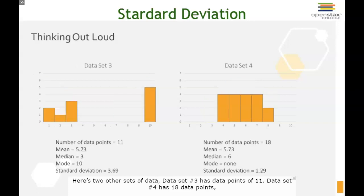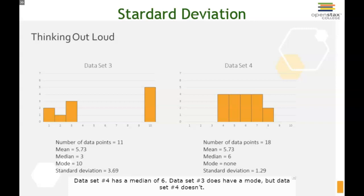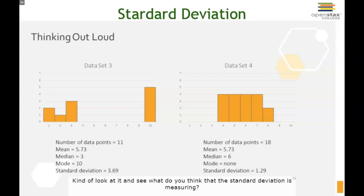The second data set has a standard deviation of 1.59. Here are two other sets of data. Data set 3 has 11 data points, data set 4 has 18 data points, but they have the same mean. Their medians are different — data set 3 has a median of 3, data set 4 has a median of 6. Data set 3 has a mode, but data set 4 doesn't. Their standard deviations are 3.69 for data set 3 and 1.29 for data set 4. Look at it and see what you think standard deviation is measuring.